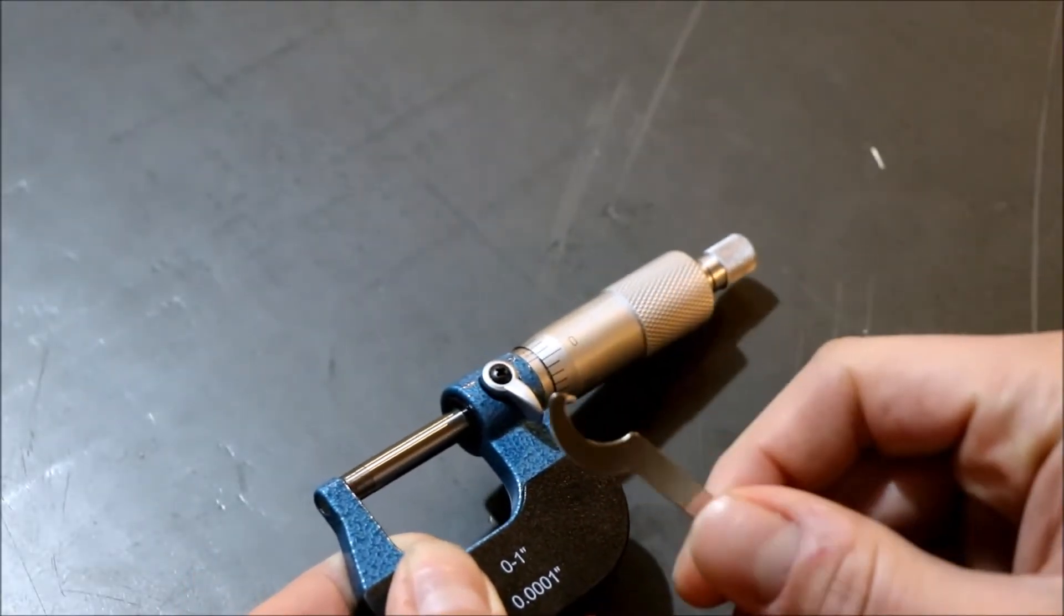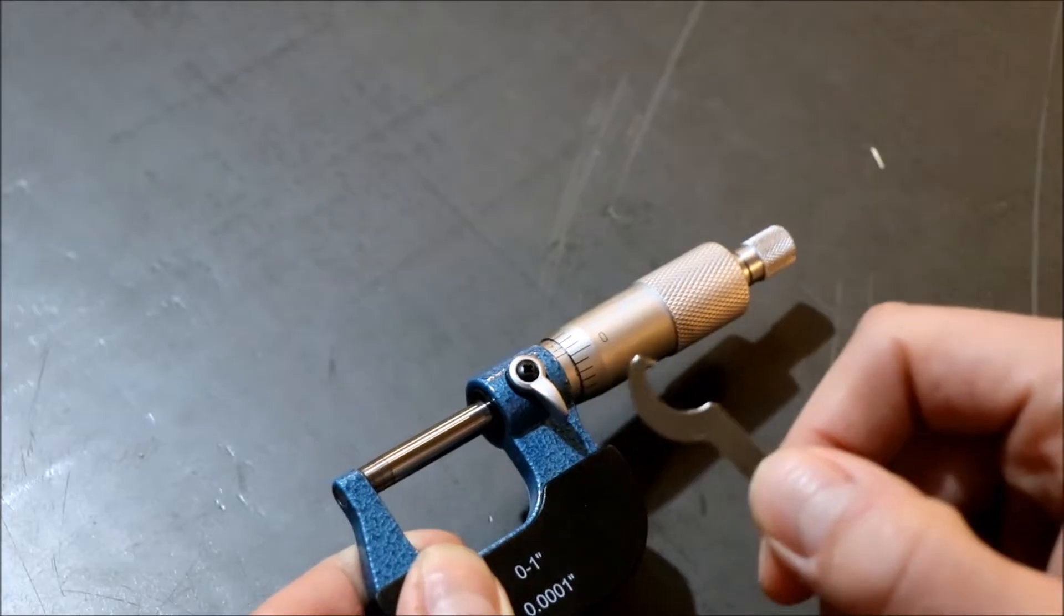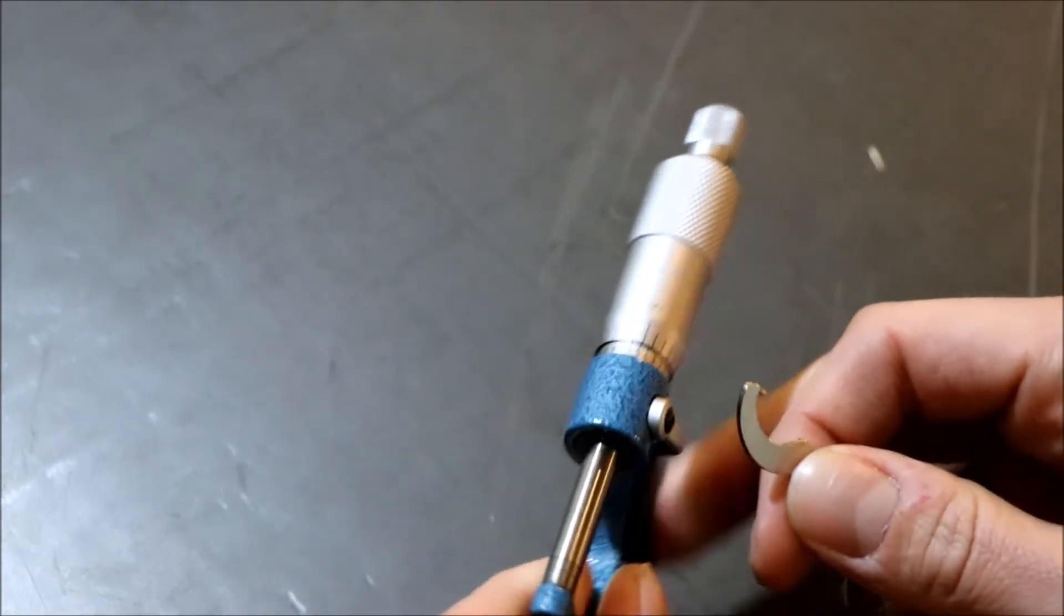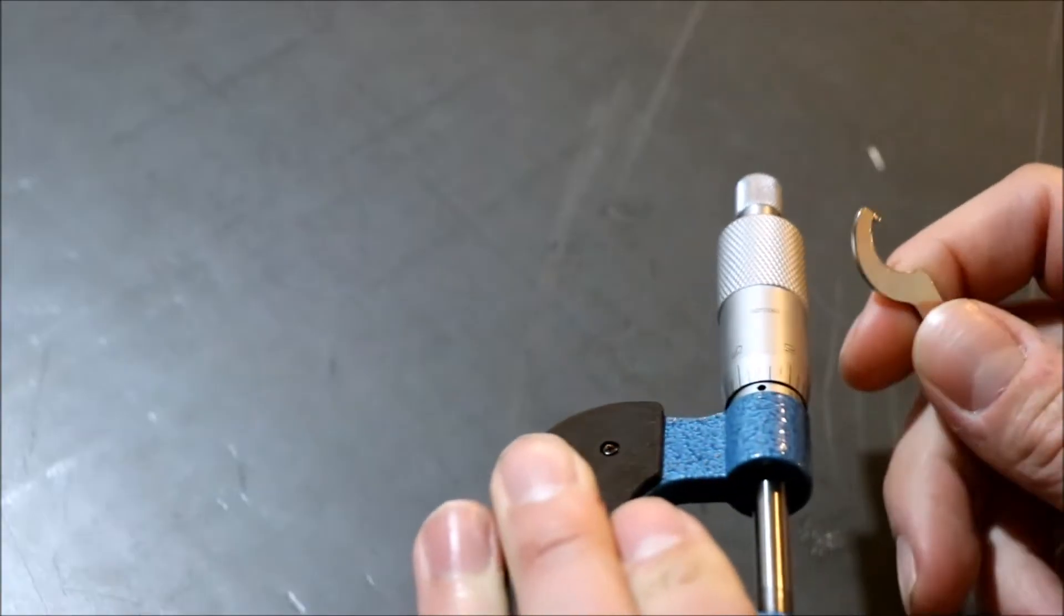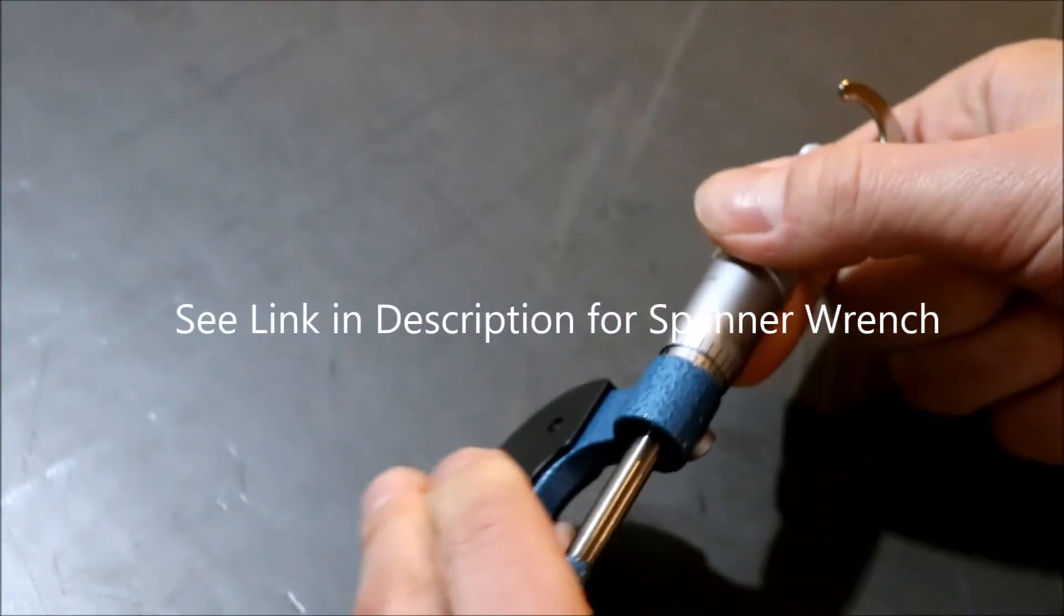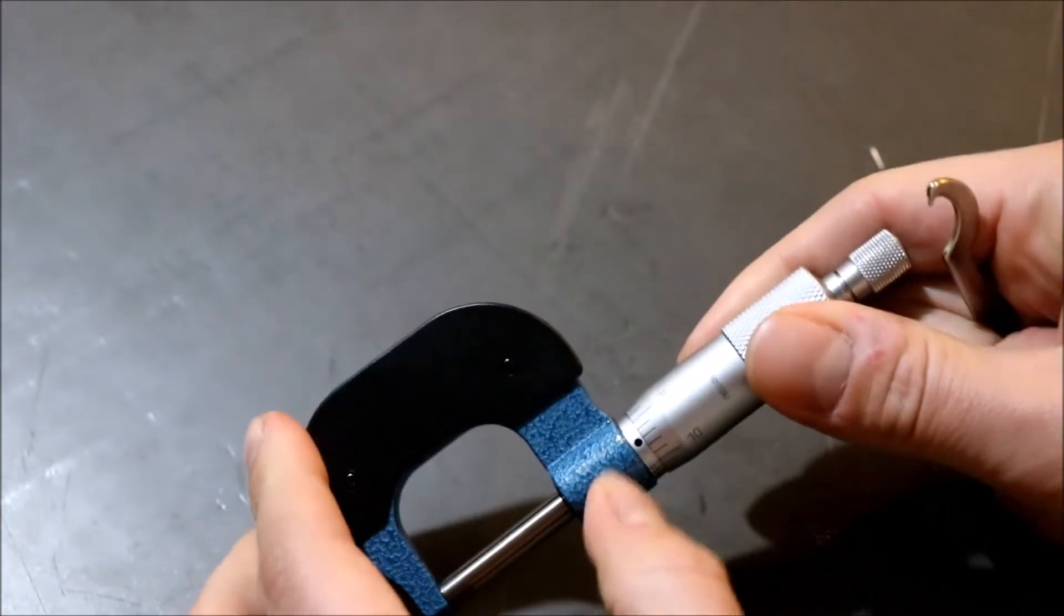should have a little spanner wrench like this that came with your micrometer. If not, you can probably buy one of these online or improvise somehow. Going to the other side, you see there's a little